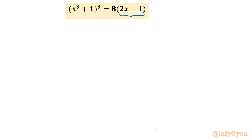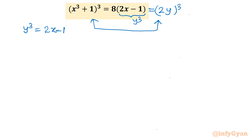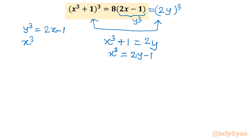I will consider 2x − 1 = y³, so y³ = 2x − 1. The right-hand side becomes 8y³, which we can write as (2y)³. Now from both LHS and RHS we have degree 3, so raising both sides to the 1/3 power gives x³ + 1 = 2y. This is equation 1. From here we also get x³ = 2y − 1, which is equation 2.